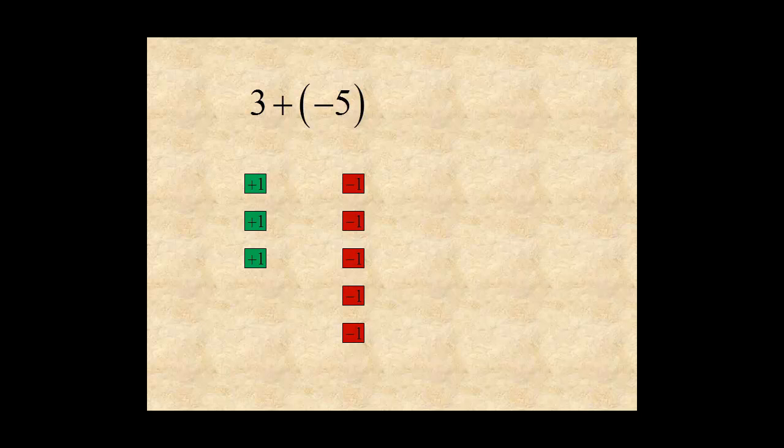If you match three negative tiles with three positive tiles, you have three zeros which you can remove. What's left is two negative tiles. So you can see that three plus negative five equals negative two.